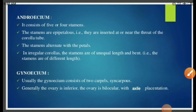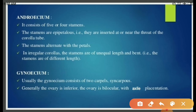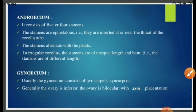The gynoecium is usually made up of two carpels, or there may be more — up to five in number. The carpels are fused, making it syncarpous. It is usually inferior and bilocular, with axile type of placentation. The placenta seen in the family is very characteristic — it is usually T-shaped, showing ovules arranged on a T-shaped placenta, which is axile type of placentation.